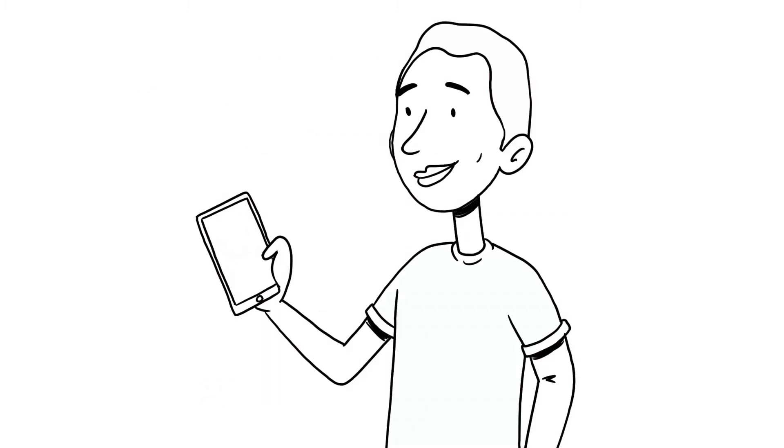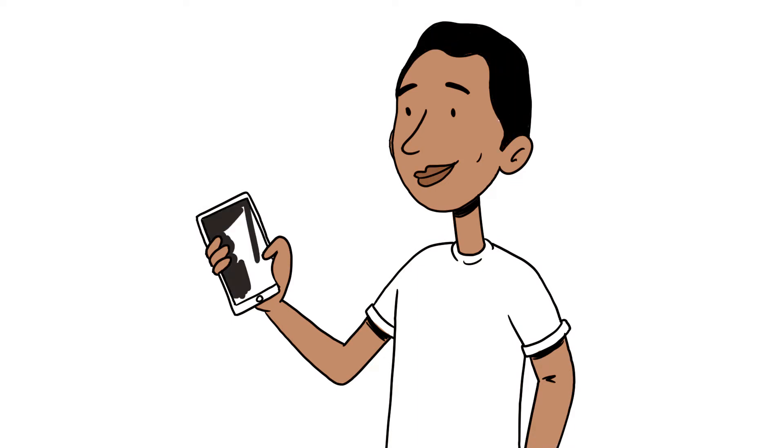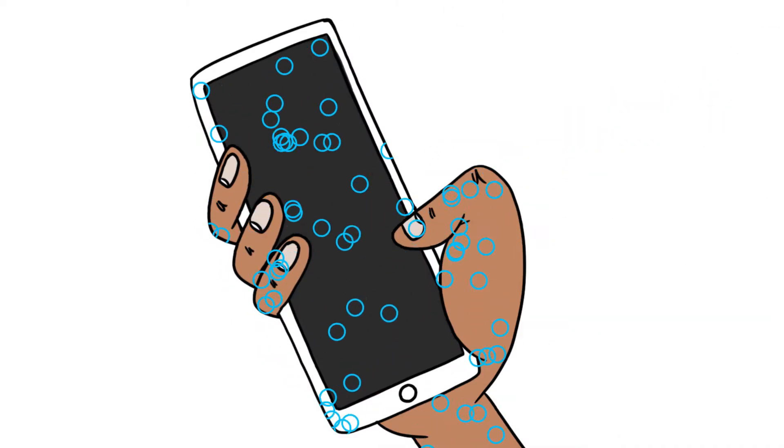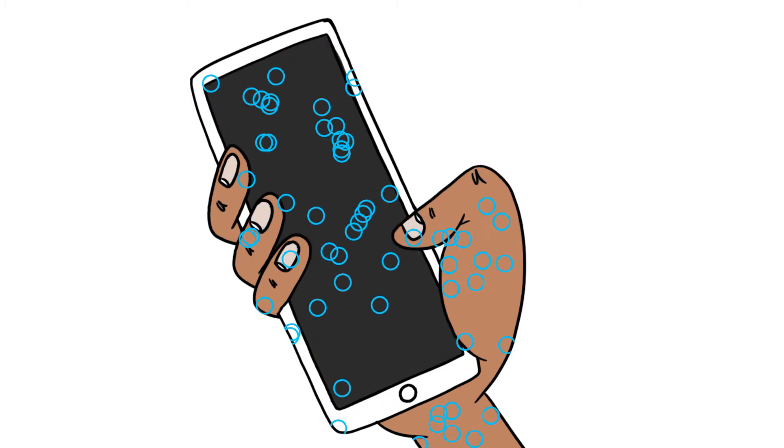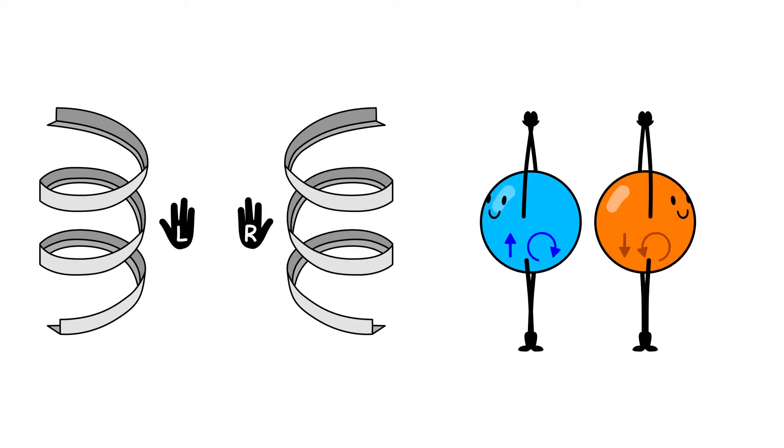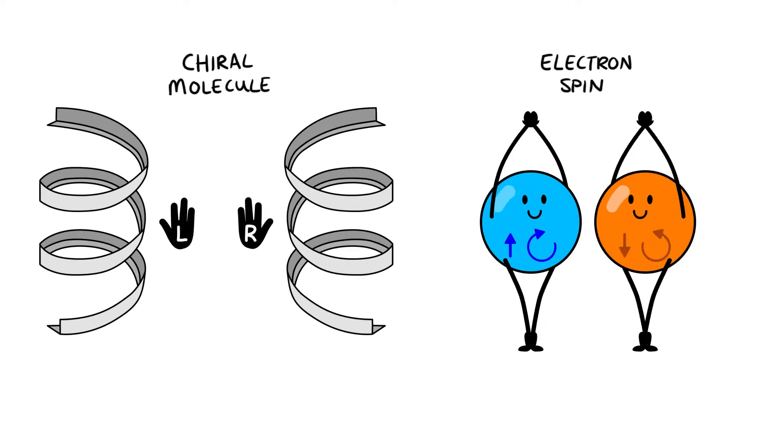Electron transfer is a process by which energy and information are transferred from one place to another in living organisms and electronic devices. The chiral-induced spin selectivity, or CISS Effect, has two main actors: chiral molecules and electron spin.